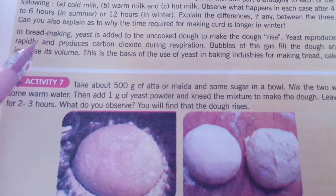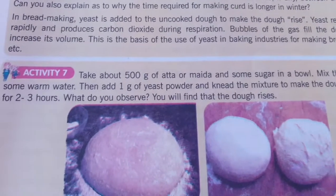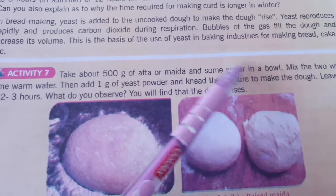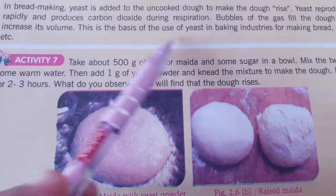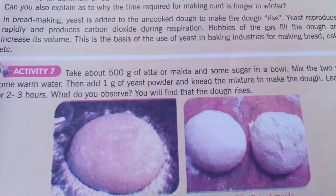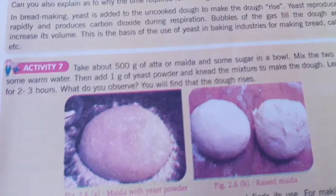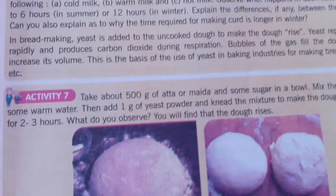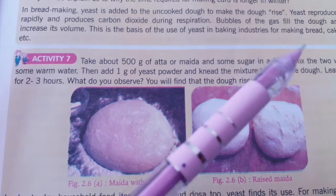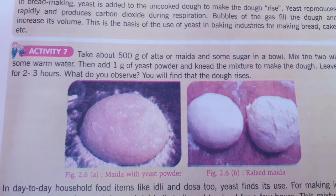Next is bread making. Yeast is added to uncooked bread dough. Yeast rapidly produces carbon dioxide through anaerobic respiration. Gas bubbles form in the bread and increase its volume. This is the basis of the yeast baking industry for making bread and cake, where yeast is used.